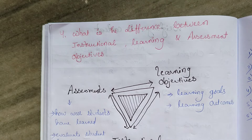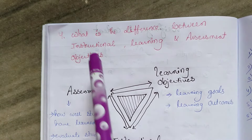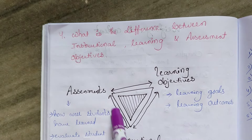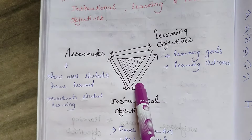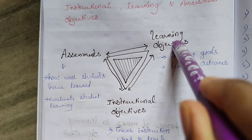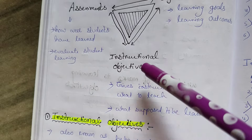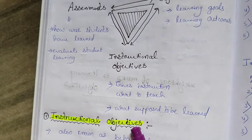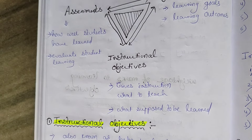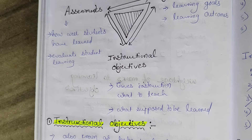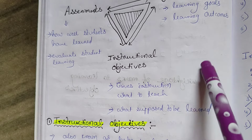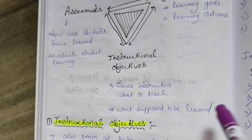These three — instruction, learning, and assessment — are very important in the education process and are aligned with each other. Instructional objective means giving instruction: what to teach. For example, a math teacher will not teach whatever she wants; she will teach according to the instructions in the book.